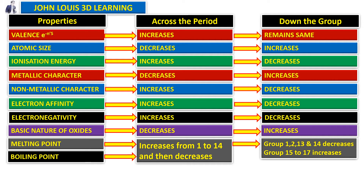Boiling point follows the same trend: it increases from groups 1 to 14 then decreases across the period. Going down the group, boiling point decreases for groups 1, 2, 13, and 14, but from groups 15 to 17 the boiling point increases.